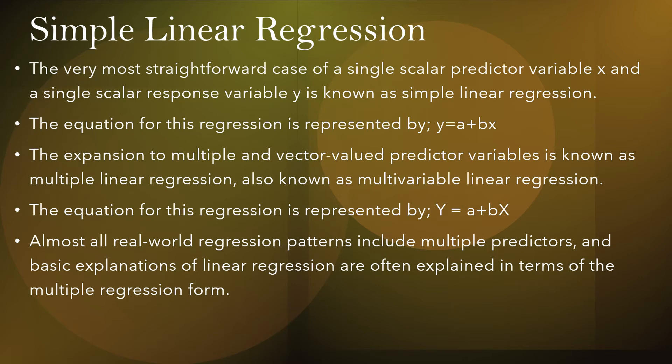Simple linear regression is the most straightforward case with a single scalar predictor variable x and a single scalar response variable y. The equation is y = a + bx. The expansion to multiple or vector-valued predictor variables is known as multiple linear regression, also called multivariable regression. In the real world, regression patterns include multiple predictors, so linear regression is often explained in terms of the multiple regression form.